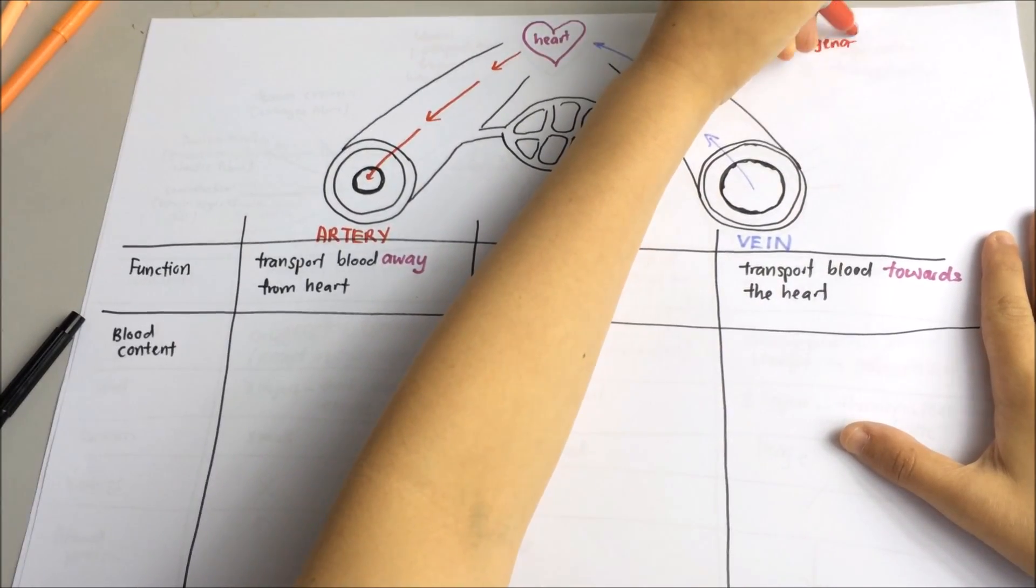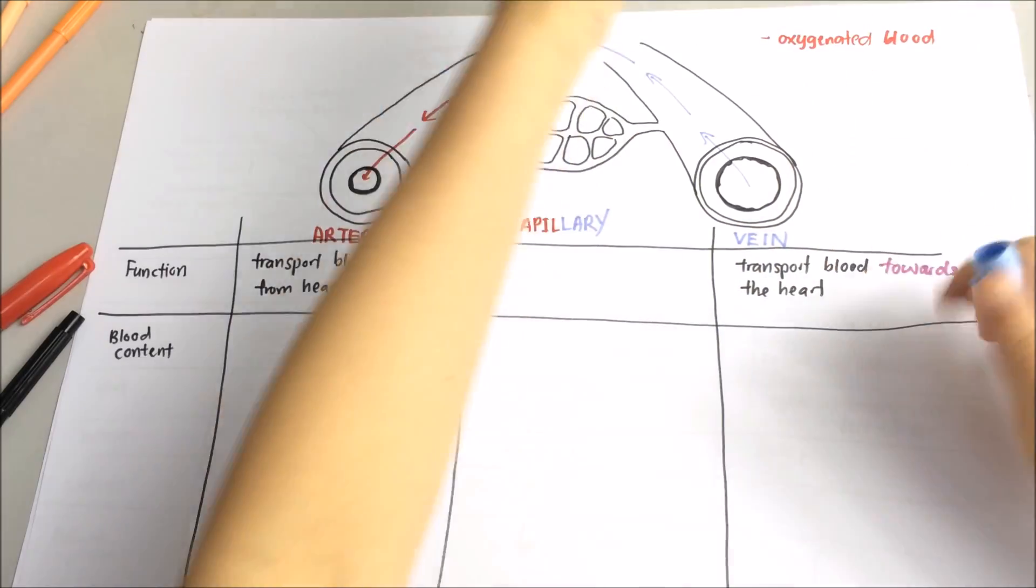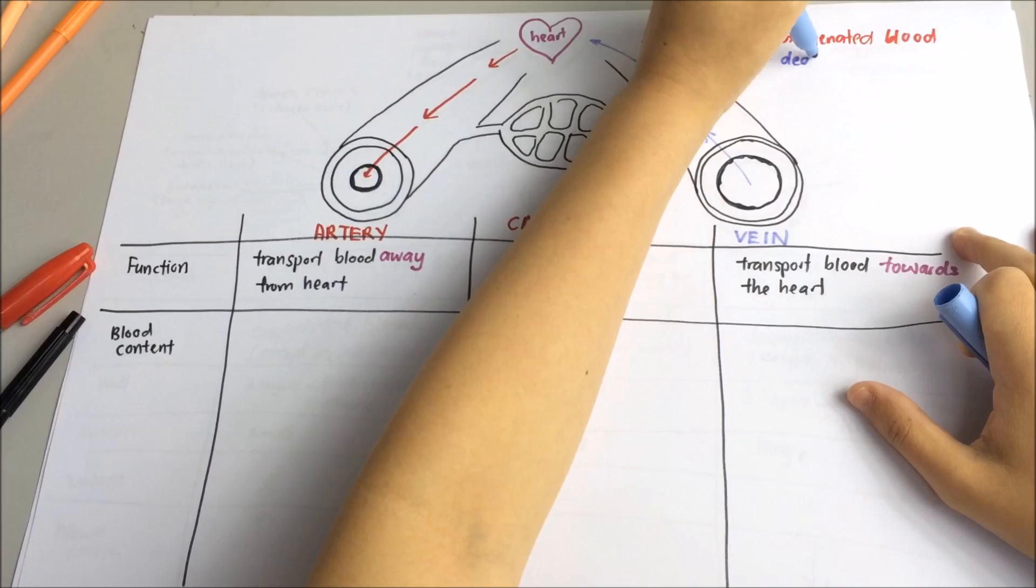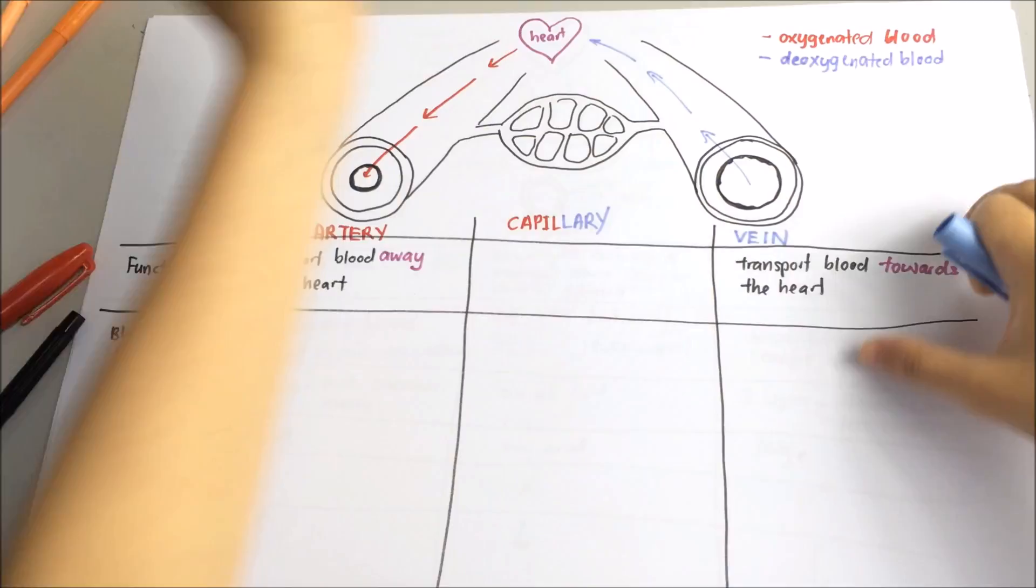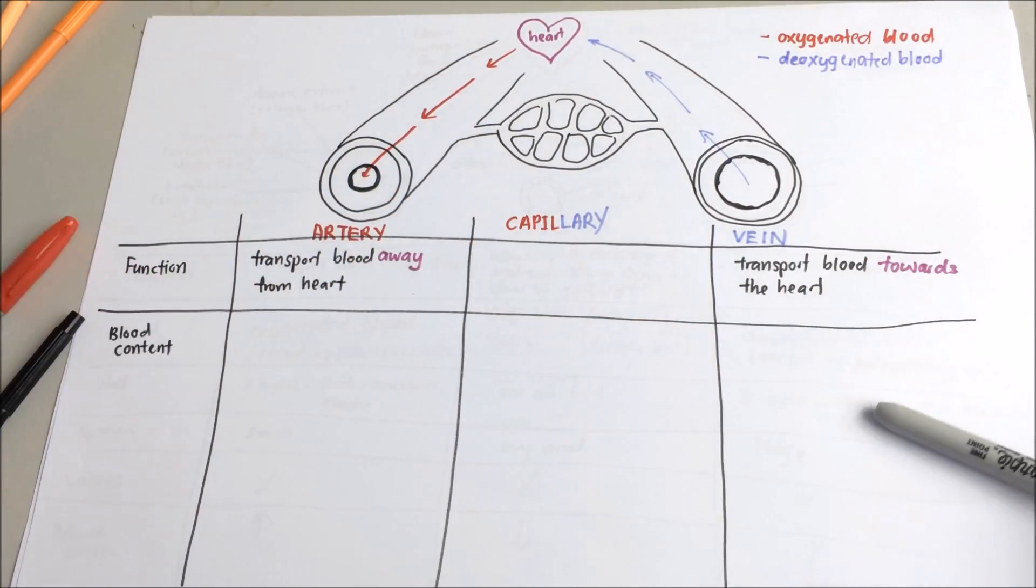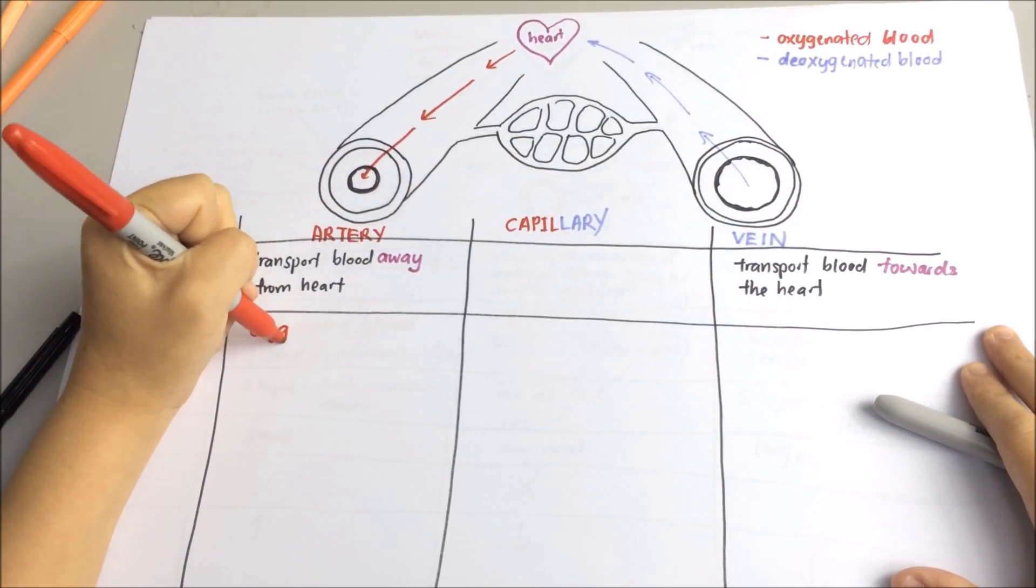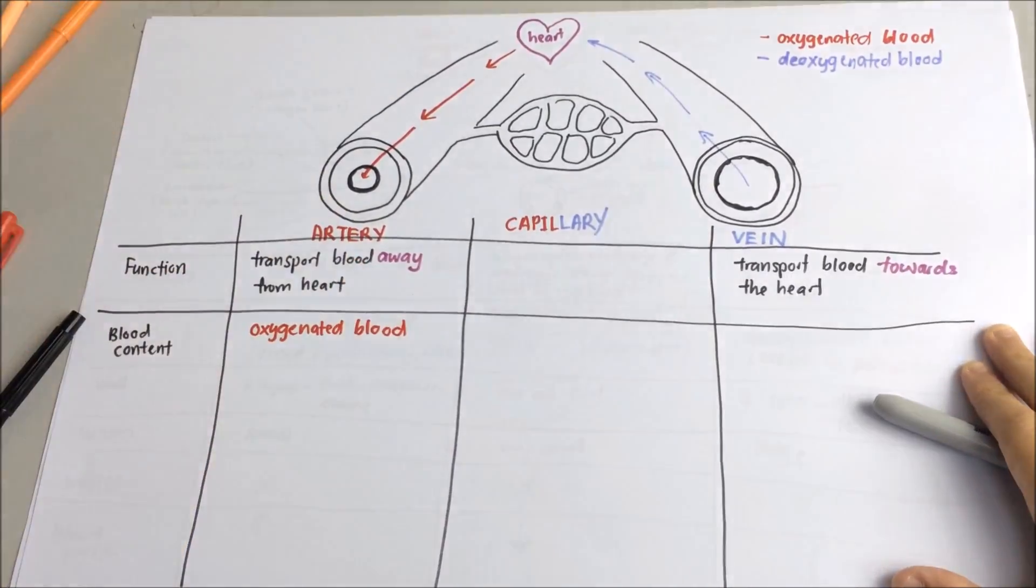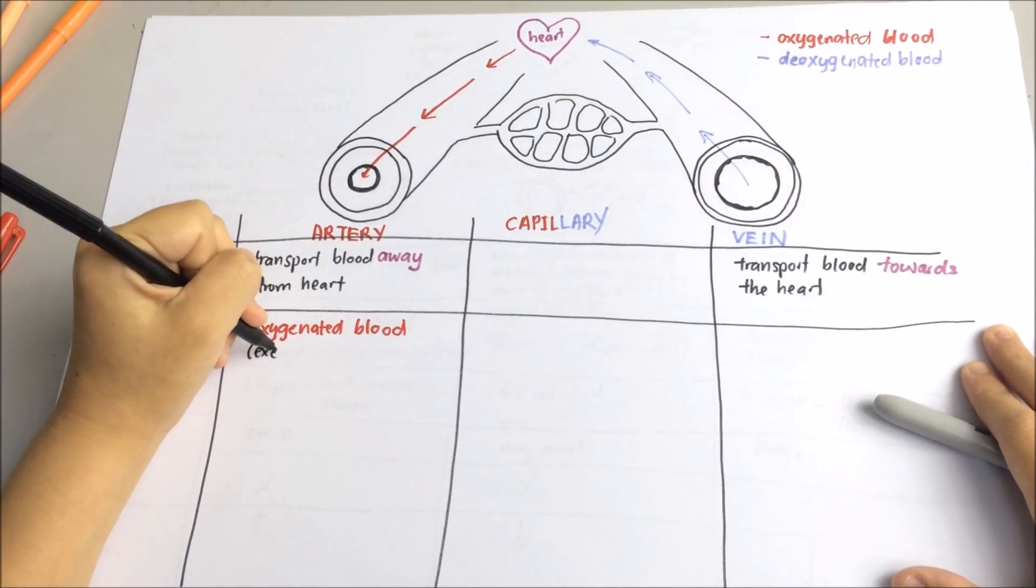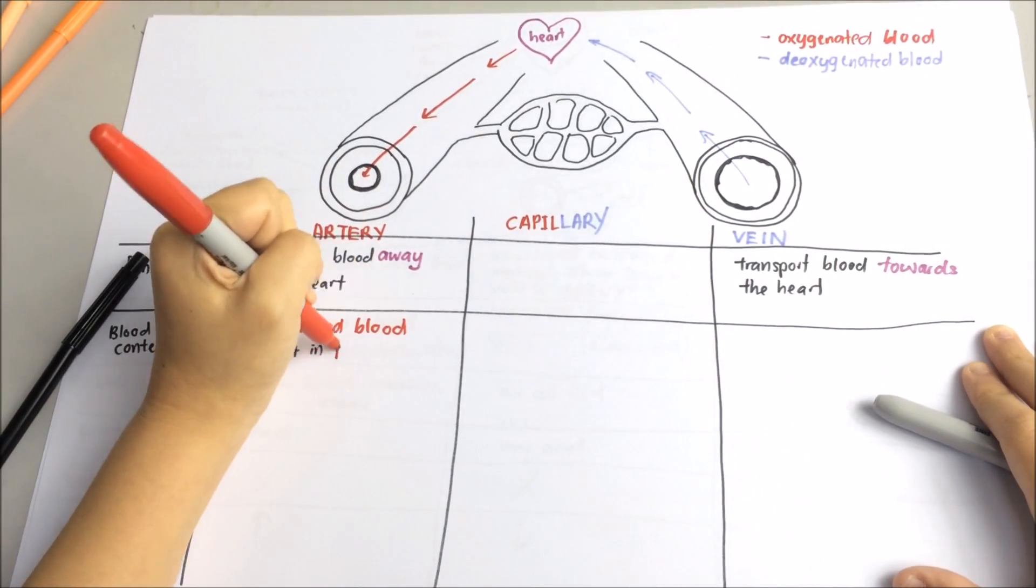The red marker represents oxygenated blood. And the blue marker indicates deoxygenated blood. Remember, artery will carry oxygenated blood except pulmonary artery.